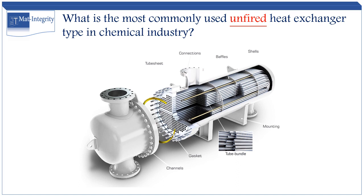Typically, the shell and tube heat exchanger consists of the following main components. The first component is a large vessel called the shell, which contains inlet and outlet nozzles. It usually has one closed end while the other end is flanged.